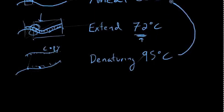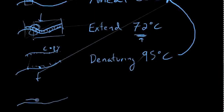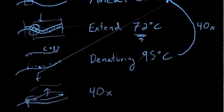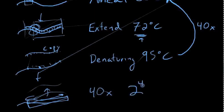We anneal another primer, extend it out, then denature it off again. You can imagine if we do this 40 times, going through this cycle 40 times, we would make 40 copies of this sequence on the template. But we don't want just 40 copies — we're greedy. We want 2 to the 40th power copies, which is somewhere between 10 to the 10th and 10 to the 14th — a very big number.